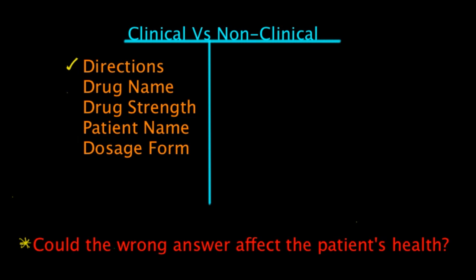The drug name? Yes — it would affect the patient's health because what if it's just the wrong drug altogether? The drug strength? If the drug is not strong enough, it won't have the same effect, and if it's too weak it won't have any effect. And the patient's name — you don't want to send it to the wrong patient, so that would affect it as well, and whoever receives that medication.